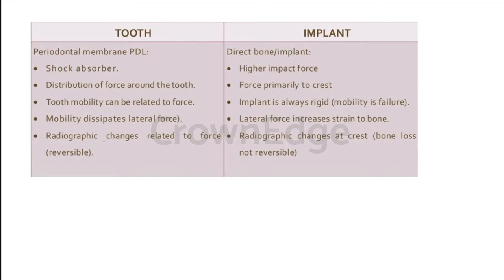In a tooth, we have the PDL which acts like a shock absorber. This shock absorber helps us to direct the forces acting on the tooth in different directions. However, implants do not have the same. Because of the absence of a PDL, the bulk of the forces start hitting the implant directly, which could lead to bone loss in the future. In a tooth the forces are variable, but in an implant they are directly moving into the crest of the bone. If your implant is not placed properly or your prosthetic is not done properly, this could lead to forces moving in different directions, causing failure of the implant.